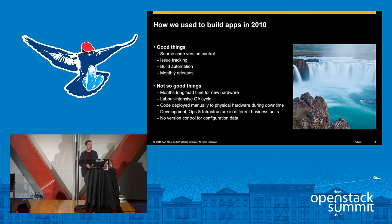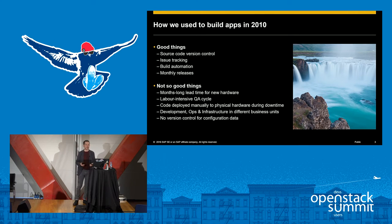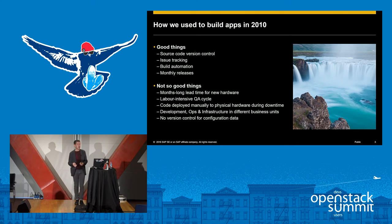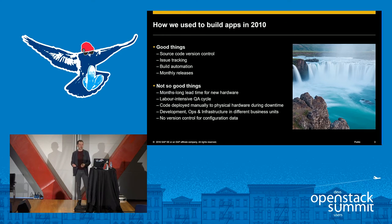I'm going to start by taking us back in time to 2010, and this is how we used to do things back then. We thought we were quite good at developing software in the IT department. We had good source control, issue tracking, and build automation — all with the Atlassian suite that worked very well for us at the time. And we were doing monthly releases of our software.